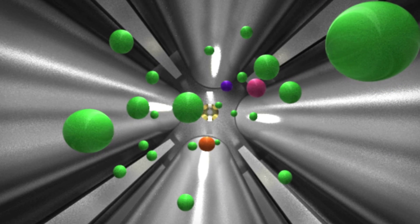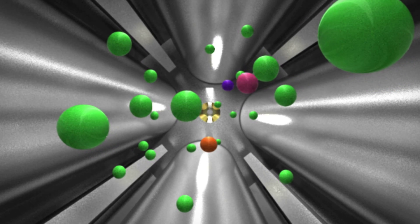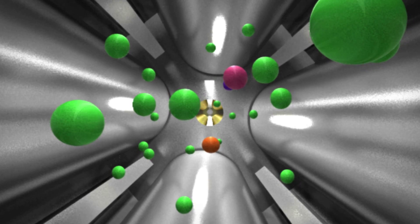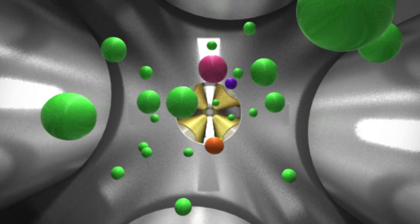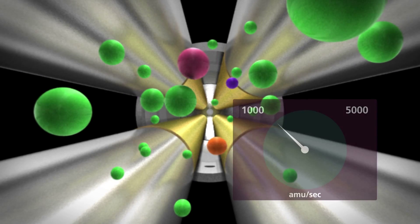No matter which approach you choose, the end result is a beam of analyte ions with very few, if any, spectral interferences leaving the universal cell and entering the analyzing quadrupole.